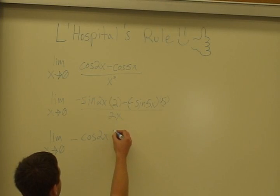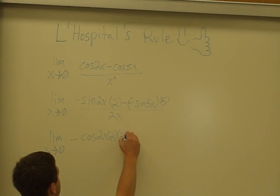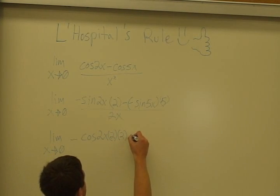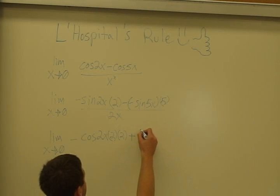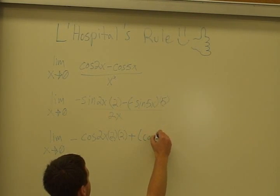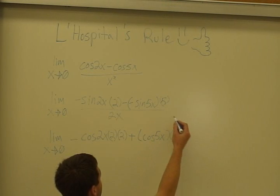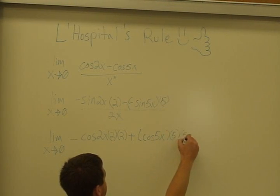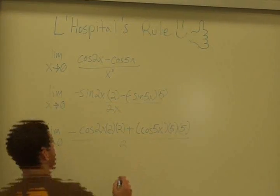We have this 2 out already, so we're going to multiply this 2 right here by another 2, because we're using the chain rule yet again. And we're going to add this, because these 2 negatives make a positive, to the cosine of 5x times 5, yet again another 5. And this is all going to be over 2.